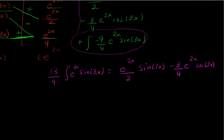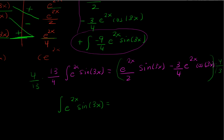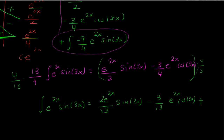My goal is to isolate the integral of e^(2x) sin(3x), so I multiply both sides by 4/13. The final answer is (2e^(2x)/13) sin(3x) minus (3/13) e^(2x) cos(3x). For all these problems we should also add a constant of integration. That's your final answer.